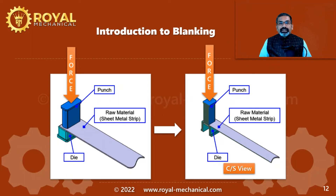To summarize: we will position the raw material strip in between the punch and the die. When the punch, which is attached to the press ram, comes down, it applies the force on the raw material strip and shears the raw material — and then blanking happens. For the shearing to happen, we need something called cutting clearance.